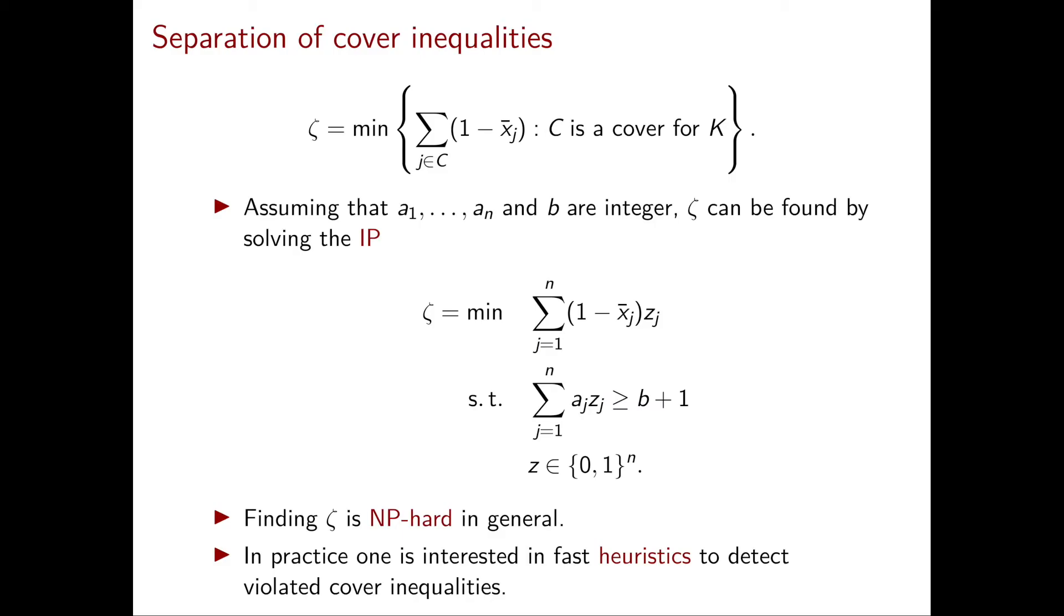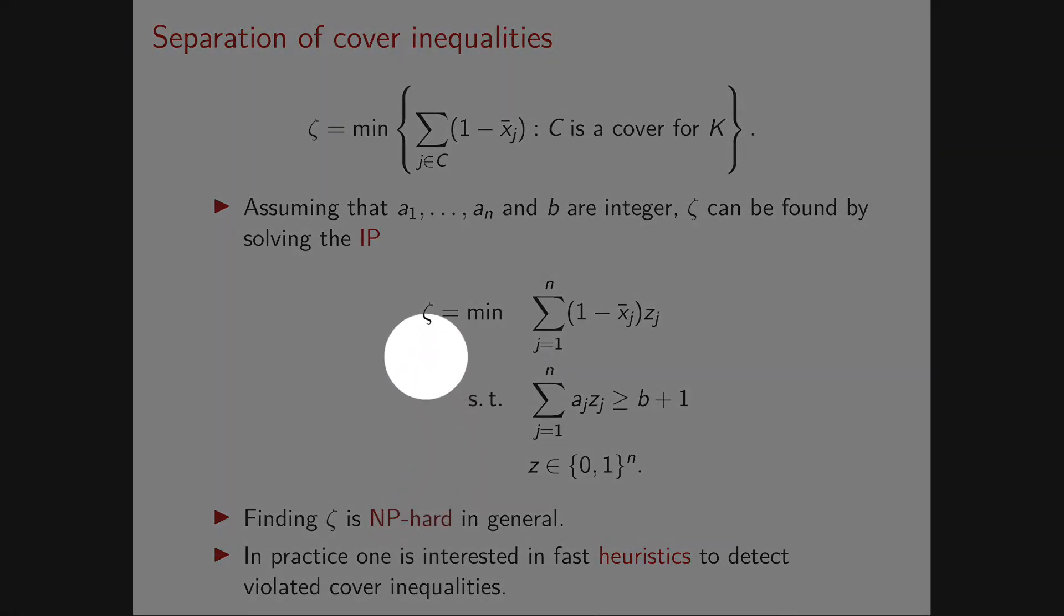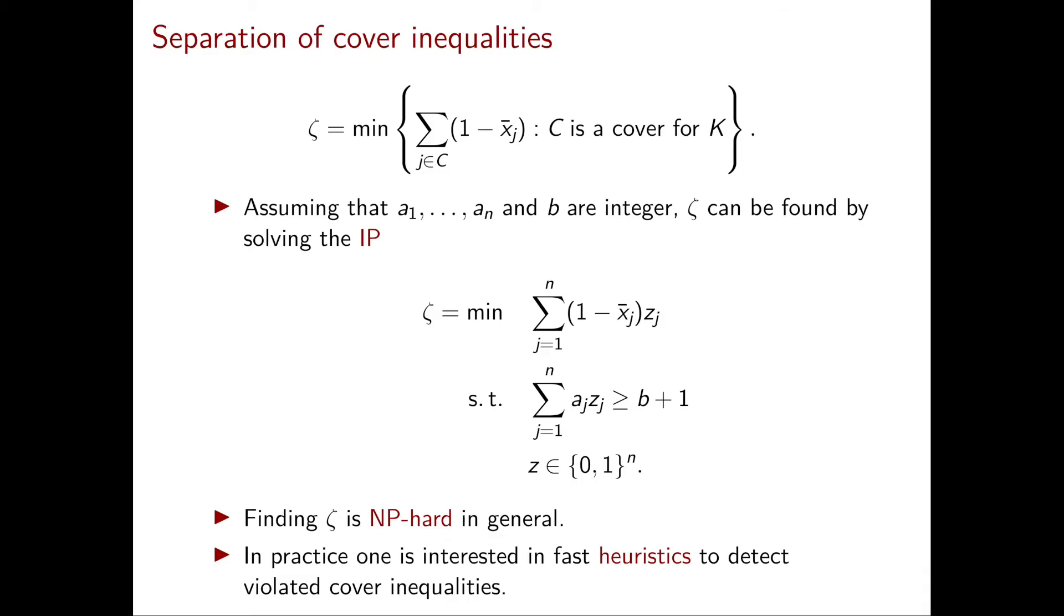We have now written our integer programming problem to find ζ. However, the problem is that this specific integer programming problem to find ζ is in general NP-hard. So this doesn't give us a way to solve the separation problem over cover inequalities efficiently. In this case, one needs to consider heuristics.